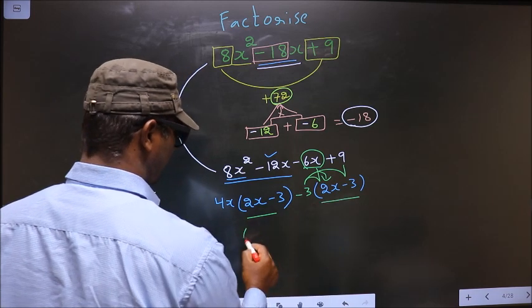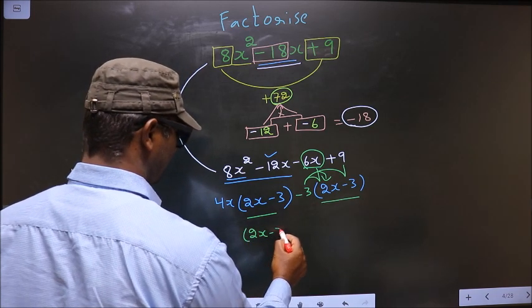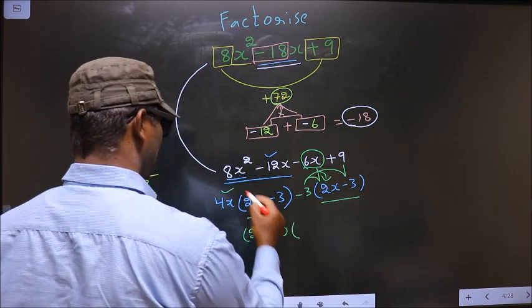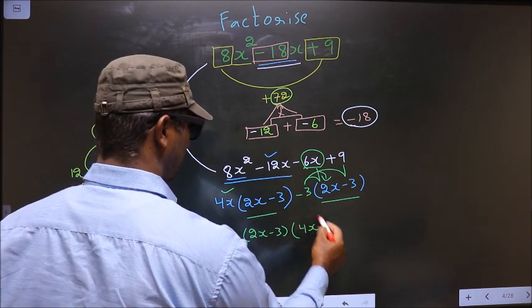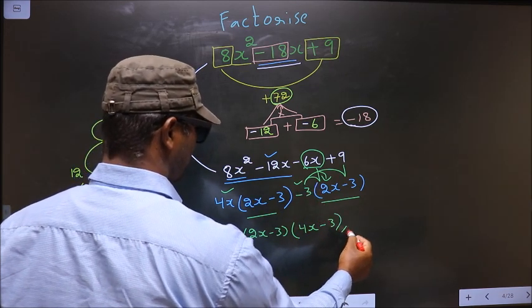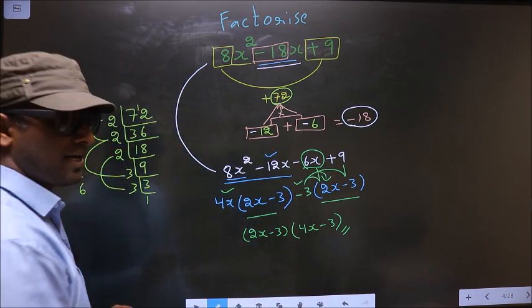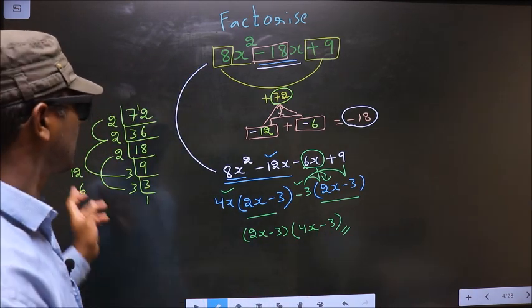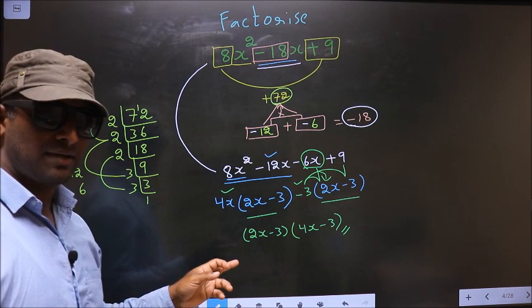Now you take out 2x minus 3 common. So here you have 4x and here you have minus 3. This is our answer. Am I clear?